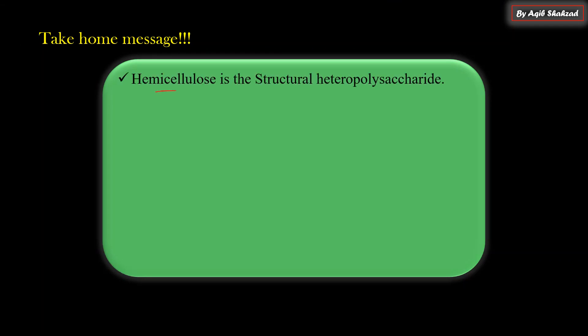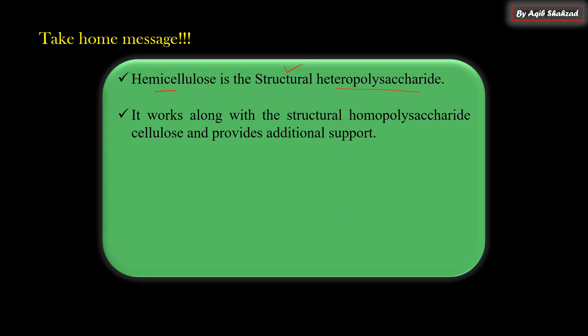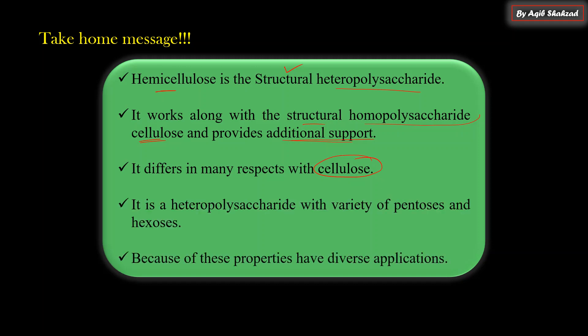Take-home message: hemicellulose is a structural heteropolysaccharide, also called polyose. It works along with structural homopolysaccharides like cellulose and provides additional support to plants in the cell wall. It differs from cellulose in many respects. It is a heteropolysaccharide with a variety of pentoses and hexoses connected by beta as well as alpha types of linkages. Because of all these properties, it has diverse applications. Happy learning - thank you so much for joining. Please hit the like button, share this video, and subscribe to the channel for more information.